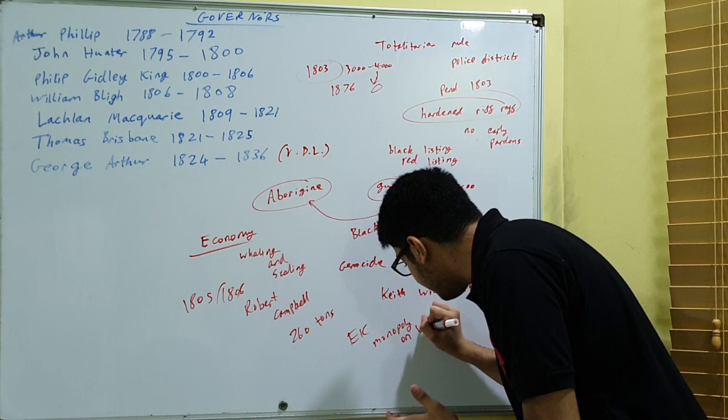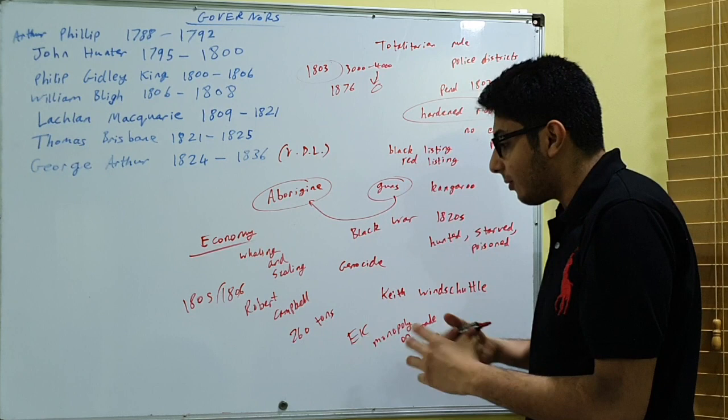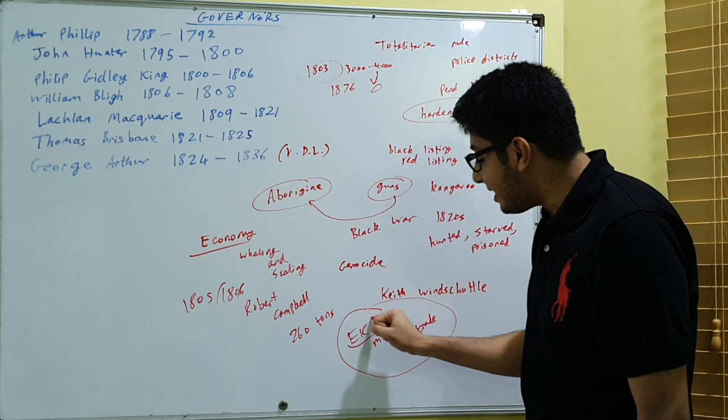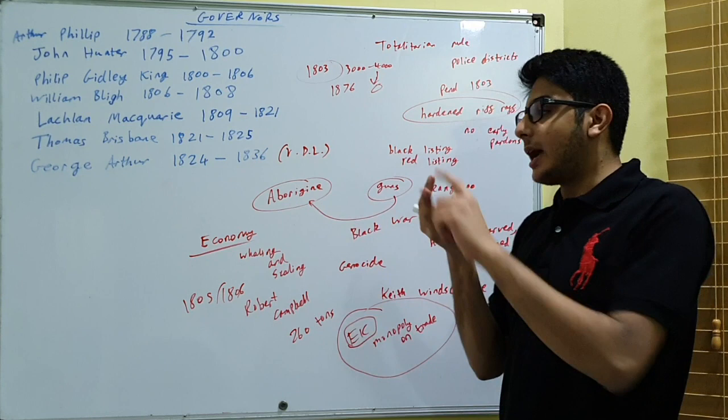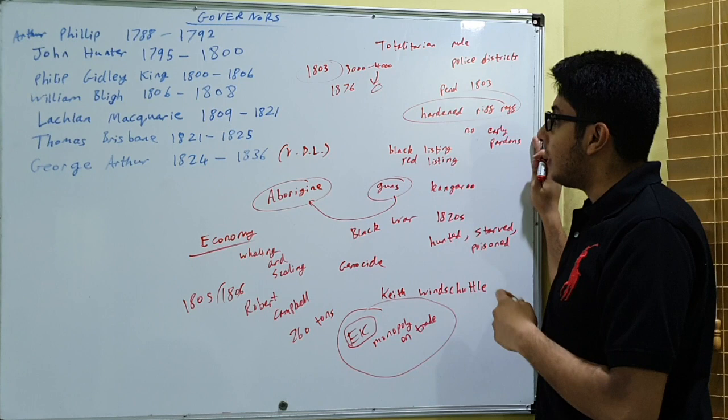And what that did is it broke the East India Company's monopoly on trade. So the business endeavors in the area were so profitable that it was able to break a company as large as the East India Company's monopoly. And that obviously contributed towards the free trade of seal goods and whaling goods and wool. So the economy was doing very well. Not the aborigine population, but the economy.